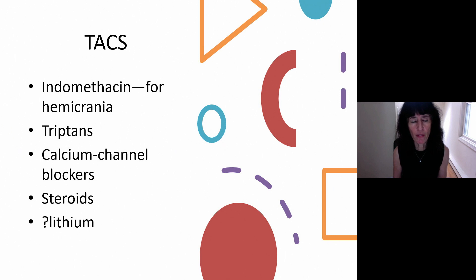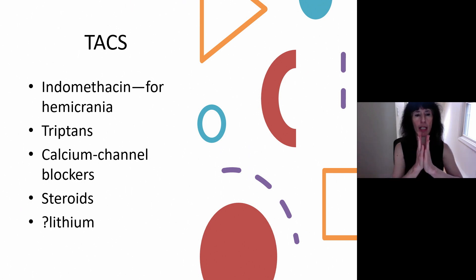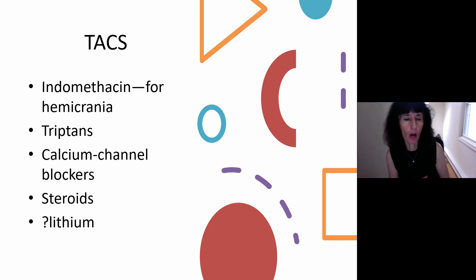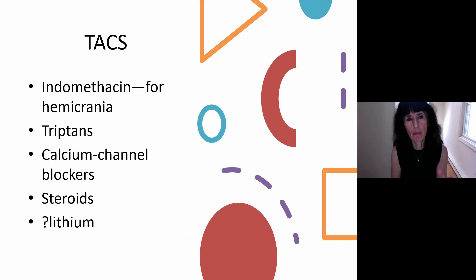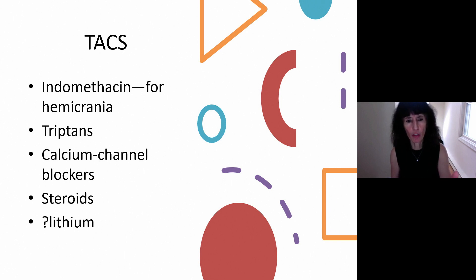For the trigeminal autonomic cephalalgias, we already talked about indomethacin. Triptans are used for cluster headache — they have to be dosed frequently. Sumatriptan injectable tends to work best, or zolmitriptan nasal spray is another good option. Calcium channel blockers such as verapamil are often used in high doses, so be careful. Steroids can help to break a cycle. There's debate about lithium. One of those monoclonal antibodies — galcanezumab — has been approved at a higher dose for cluster headaches, and it can be really effective and is definitely worth considering for cluster patients.